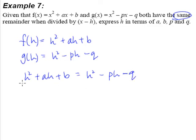Alright, so what are we supposed to do next? Well, we're supposed to express h in terms of a, b, p and q, which simply means that we have to make h the subject. So we're going to make h the subject.